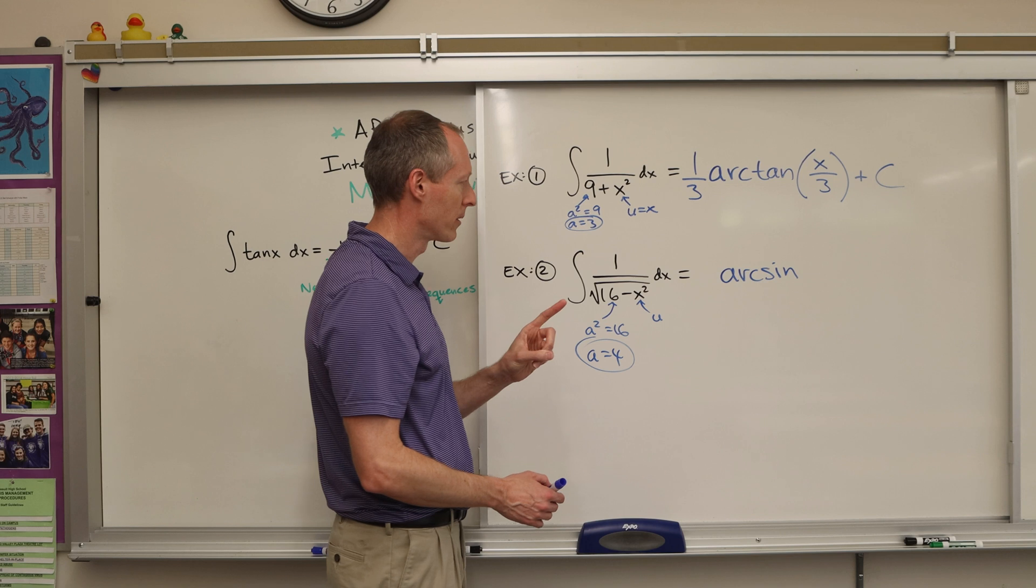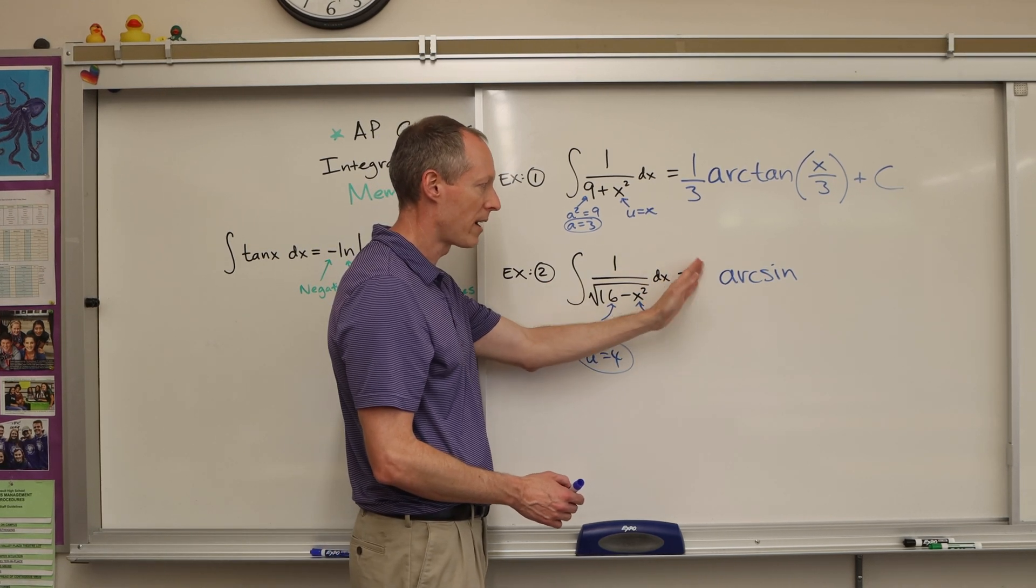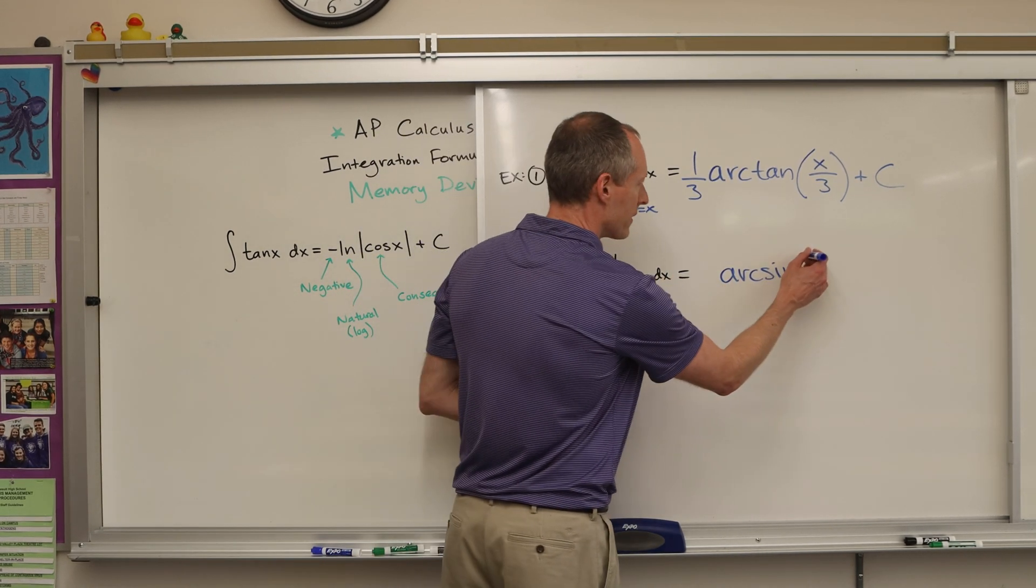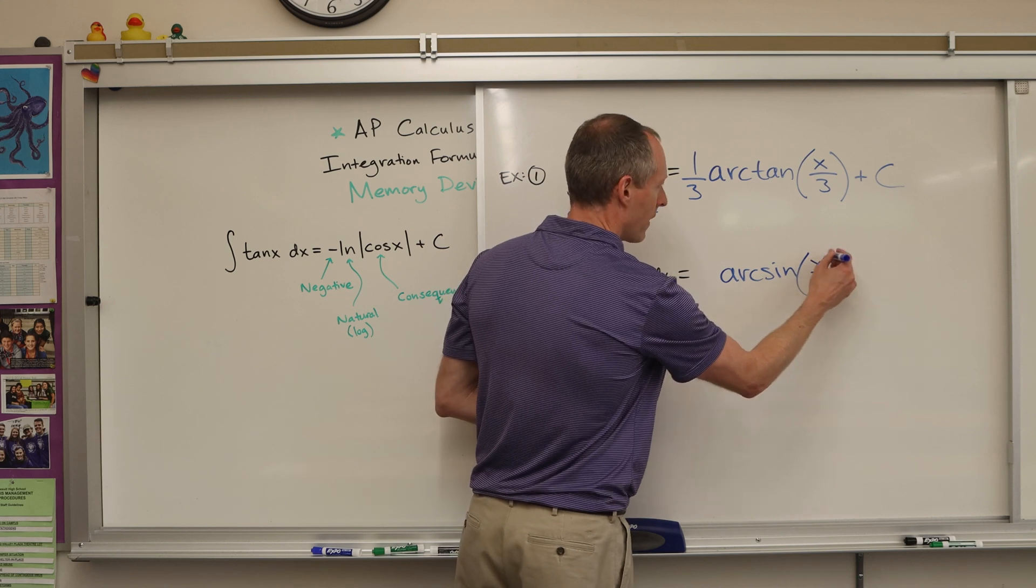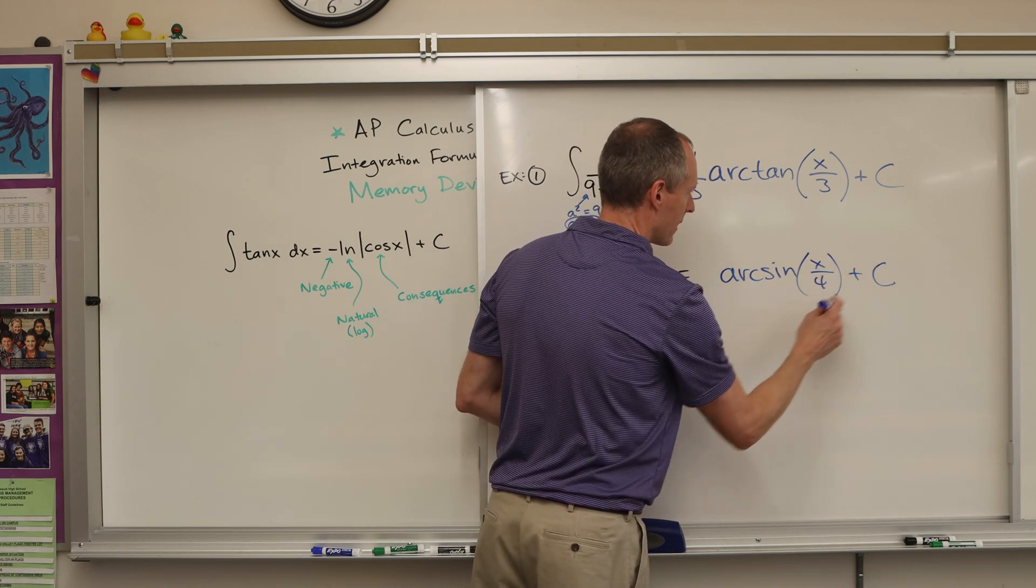Remember, arc sine is simpler. It's simpler. It doesn't have 1 over a, so nothing there. Arc sine, u over a, and then plus c at the end.